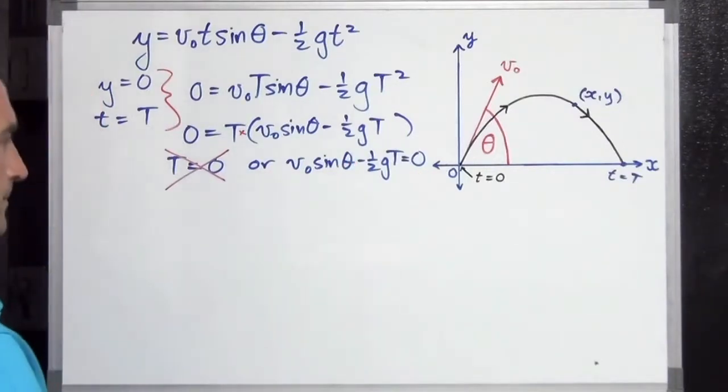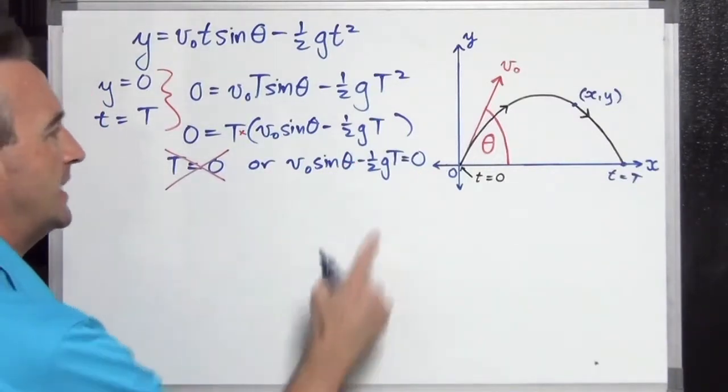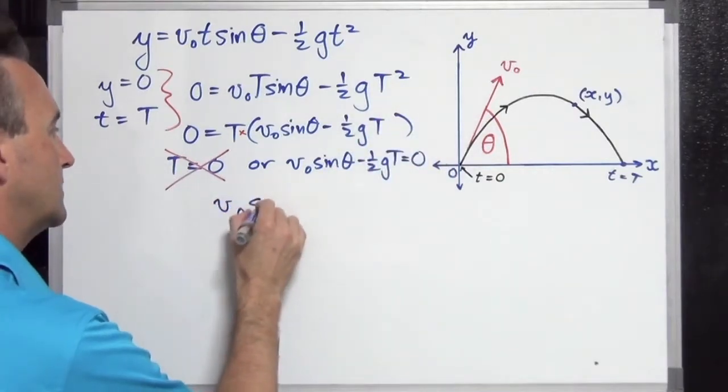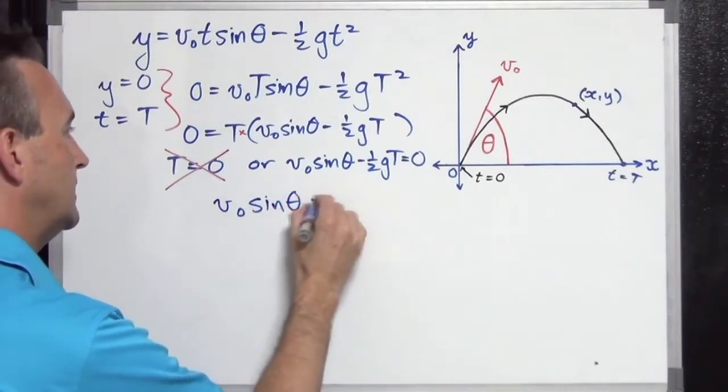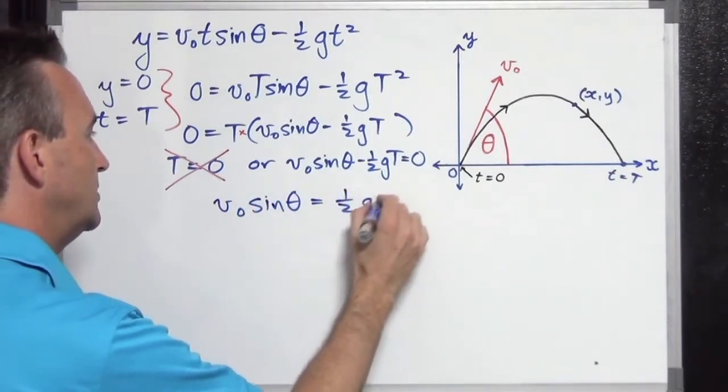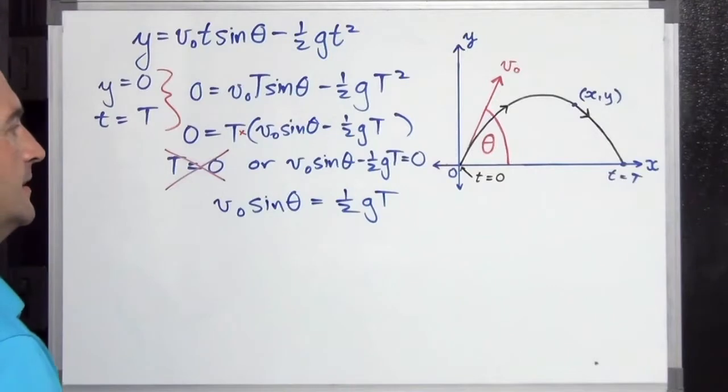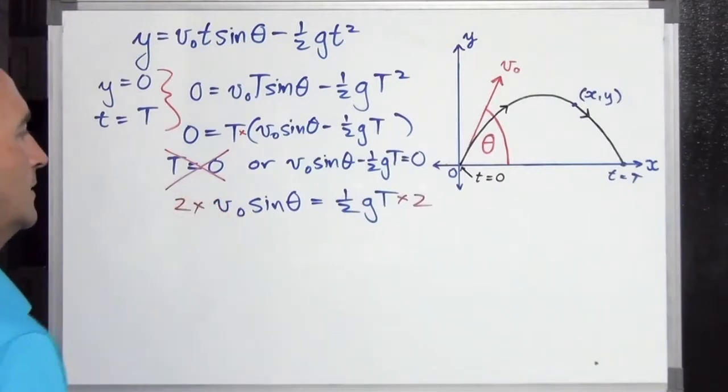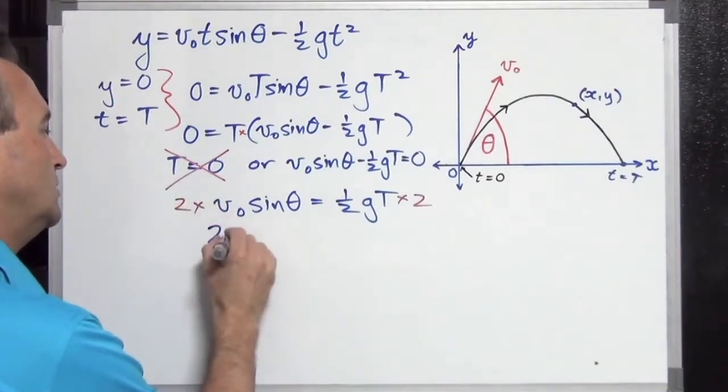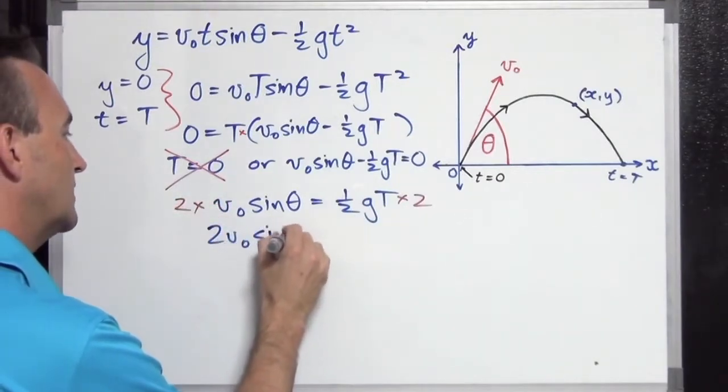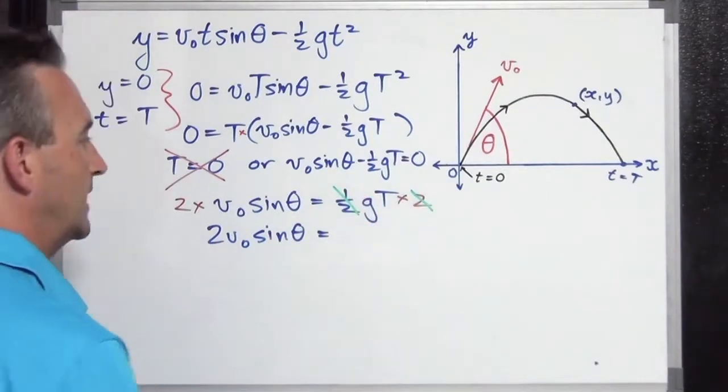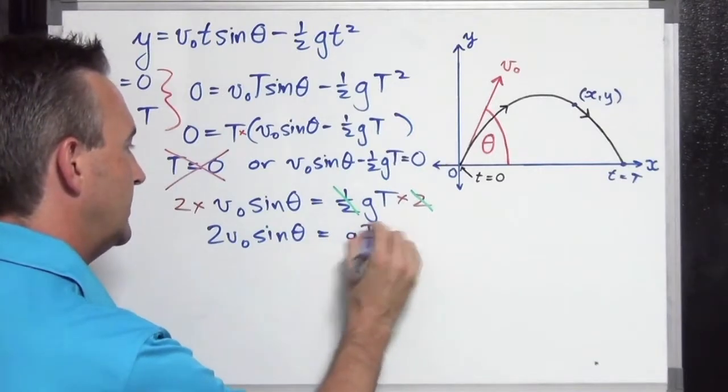So let's solve this one. Let's take the half GT squared, the negative half GT squared, to the other side. V naught sine theta equals one half GT. Now we want to get T alone, so let's get rid of that half by multiplying both sides by two, which gives us two V naught sine theta equals, and then the half times two is just going to give one, and we're going to be left with GT over here.